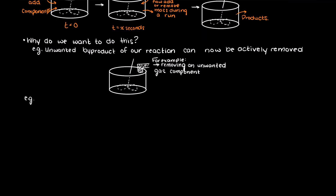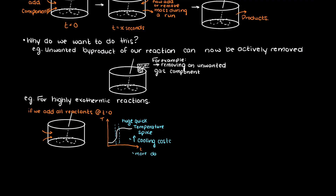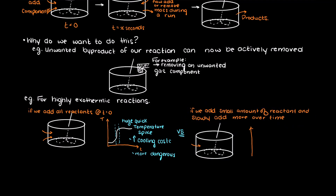Another example of where semi-batch reactors excel is if we have a highly exothermic reaction occurring. Instead of adding in all of our reactants at time zero, we can start with a small amount at time zero, and then control the inflow of reactants to ensure there is always sufficient cooling occurring before adding in more reactant. This prevents a runaway reaction, and it also decreases our cooling costs as the reactor won't get as hot.